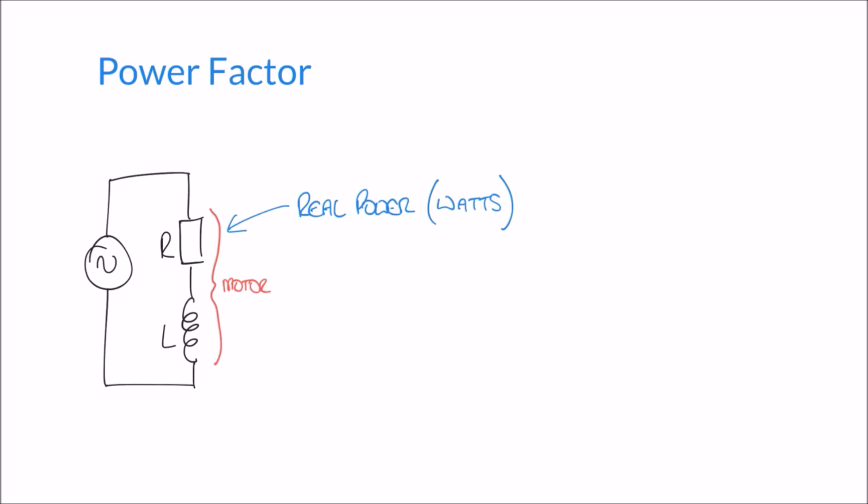We also have an inductor in this circuit, and an inductor is a reactive component. Reactive components dissipate reactive power, so we also have an example of reactive power in this circuit. Reactive power is not measured in watts — it's measured in what we call VARs, V-A-R in capitals. These units are totally equivalent in magnitude — one watt is the same magnitude as one VAR — but we differentiate them to make it clear: VARs means reactive power, watts means real power.